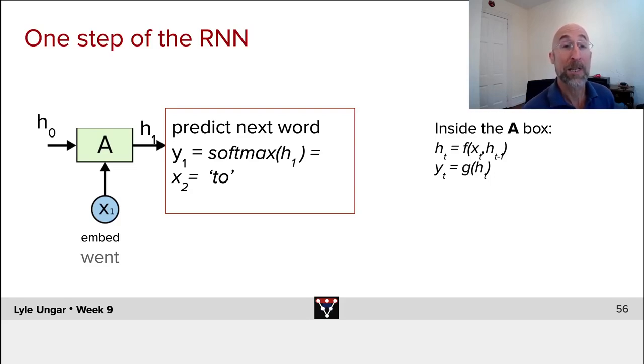We take the hidden state h1, the embedding of the next word to, put it into the same neural net f, and we get a new hidden state and repeat the process over and over. This is done on lots of words, typically hundreds of millions or even billions of words. And at the end, we have a really nice recurrent neural net that has a good language model.